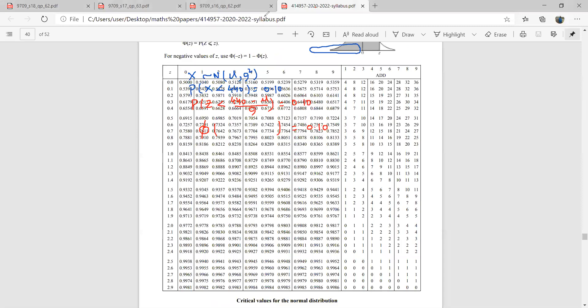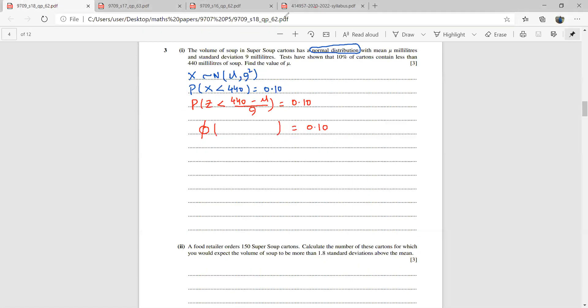Rather than substituting, I think you should forcefully make it minus. I'll be taking a minus common from here, this is mu minus 440 over 9. Without paying much we have got this to be minus. So now this would be 1 minus phi of mu minus 440 over 9, that is equal to 0.1.